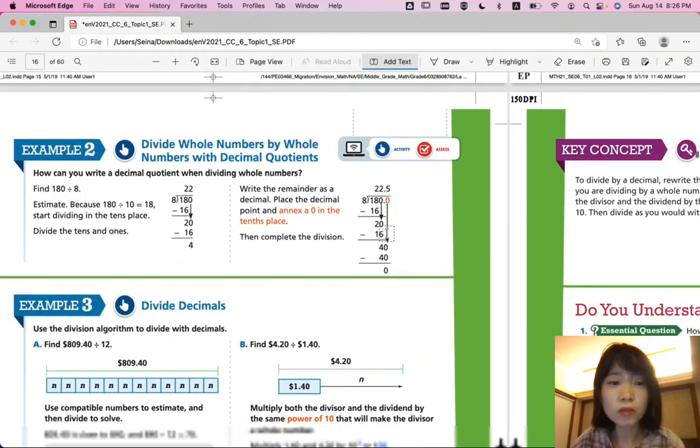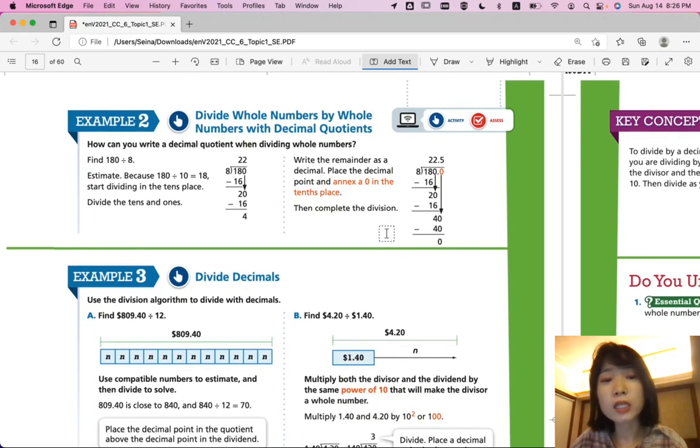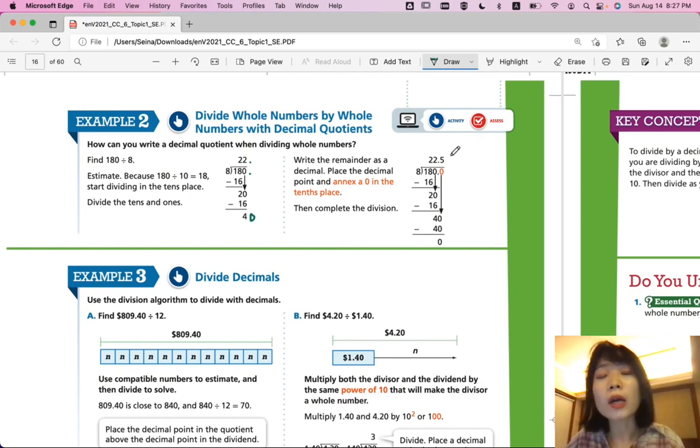Example 2. Divide whole numbers by whole numbers with decimal quotient. How can you write decimal quotient when dividing whole numbers? So, let's find 180 divided by 8. Whole number divided by a whole number. So, when you have a remainder of 4 here, you can keep going on by adding a decimal place right here. You know that 22 comes before the decimal place because 180 has a decimal place after 0. So, that should align with each other. So, when you want to continue solving for it and add 0, make sure you put a decimal place after 22. And, 8 times 5 is exactly 40. So, you would have a remainder of 0 eventually. But, you would have a decimal as an answer, 22.5.